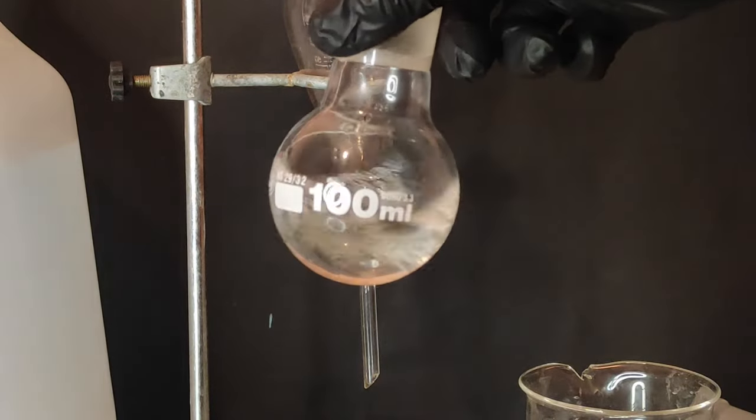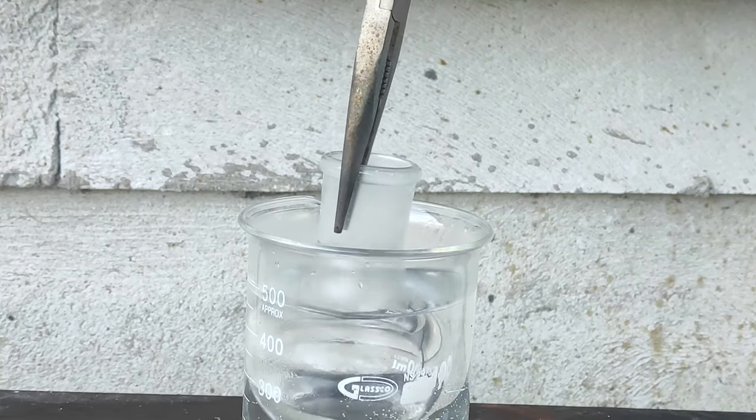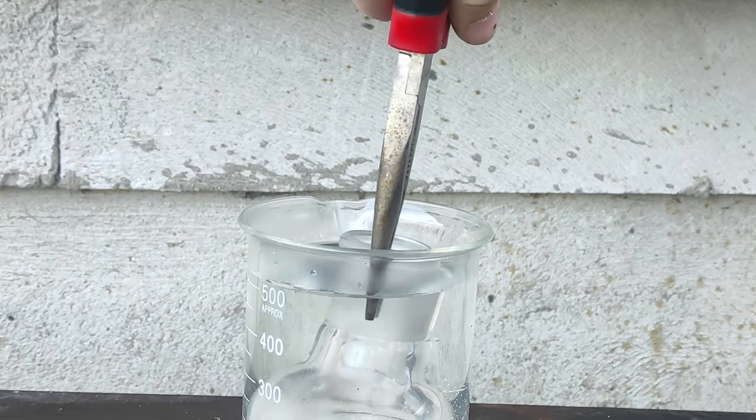Theoretically most of the nicotine should have passed over into the ether layer. Now is the fun part, which is evaporating the diethyl ether. Diethyl ether has a boiling point of around 30°C, which means it very easily evaporates.